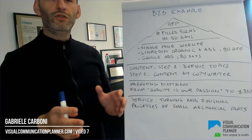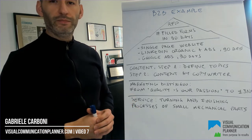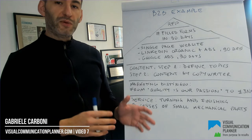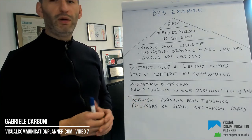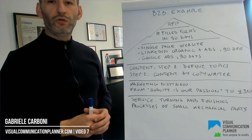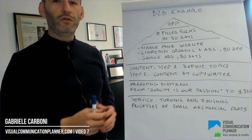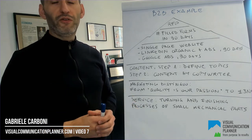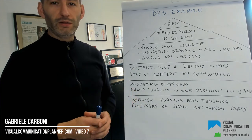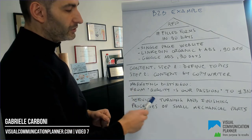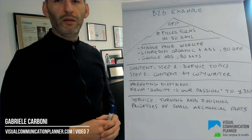This distinguishes the company from the competition very clearly. And now it's the turn of product or service — in this case it is very easy. Please remember to fill all the questions of the Visual Communication Planner, because maybe you have to modify or change your product or service for a different market. The service of this company is turning and finishing processes of mechanical parts.